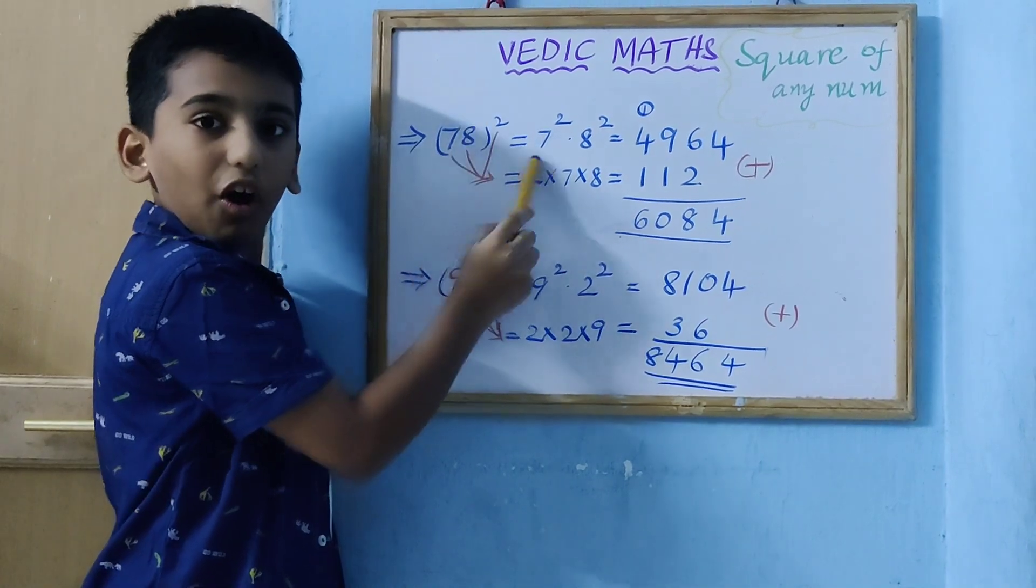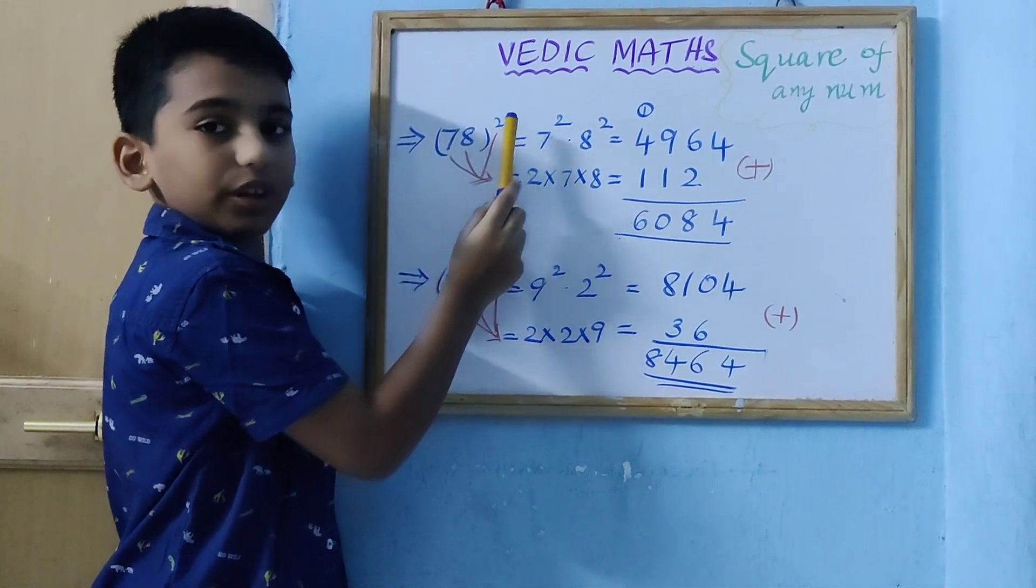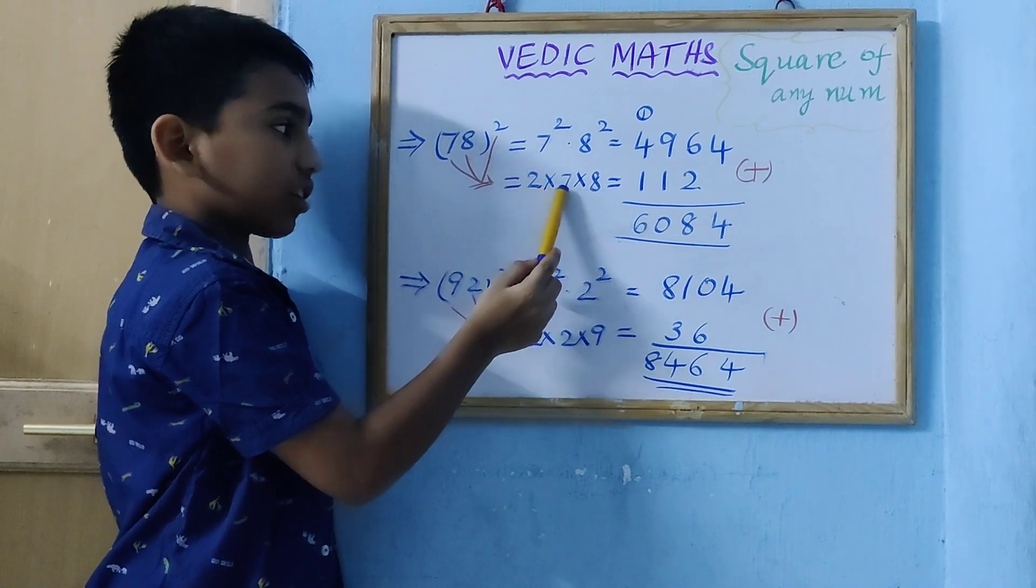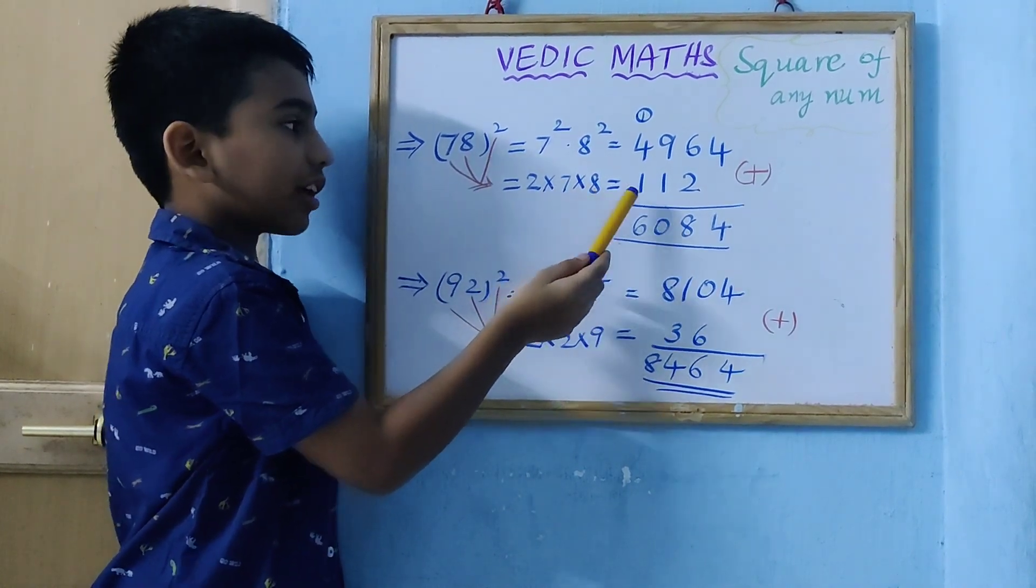Then, we multiply all these numbers. 2 into 7 into 8. 2 times 7 are 14, 14 times 8 is 112.